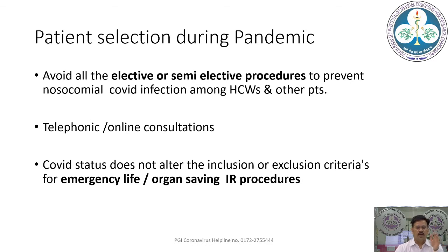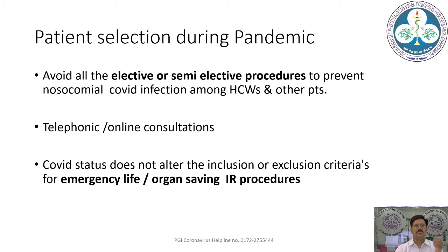Per current guidelines for patient selection: avoid all elective or semi-elective procedures to prevent nosocomial COVID infection among healthcare workers and other patients, since most patients cannot be reliably diagnosed beforehand and machines are common to diagnostic and therapeutic procedures. Many procedures are of long duration. Whenever possible, use telephonic or online consultation. Crucially, COVID status does not alter inclusion or exclusion criteria for emergency life- or organ-saving IR procedures.